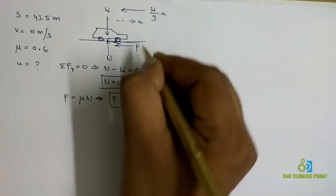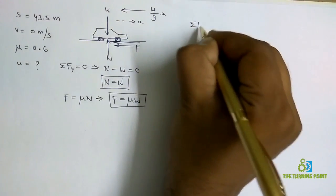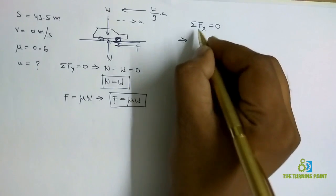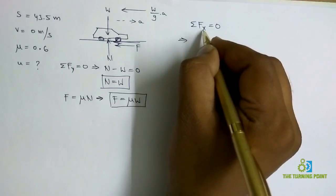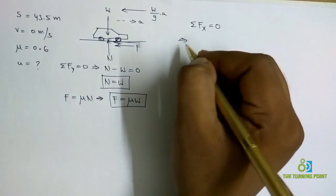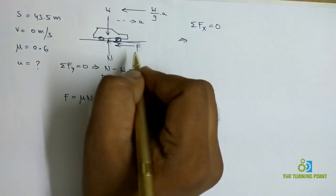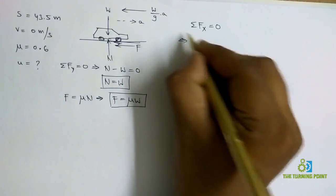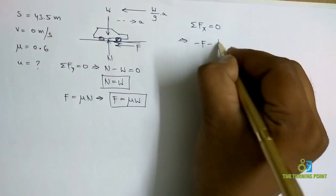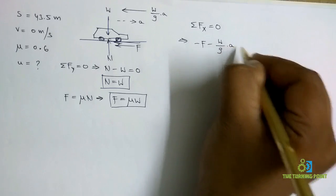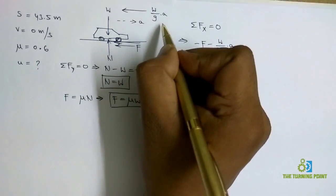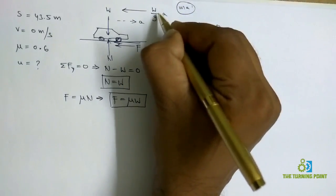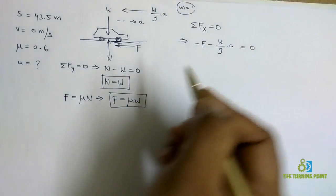Now consider ΣFx = 0. The algebraic sum of force components along x direction is equal to 0. So along x direction the forces are F along negative x direction, so -F and -W/G into A. Here W/G into A is the inertia force which is nothing but MA, written in terms of weight, which is equal to 0.